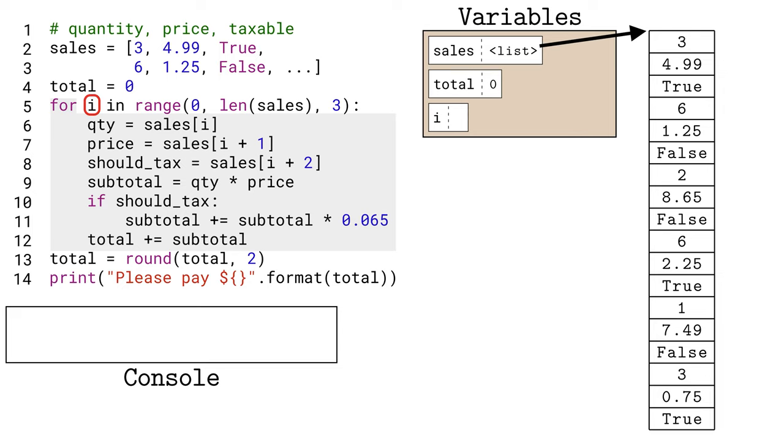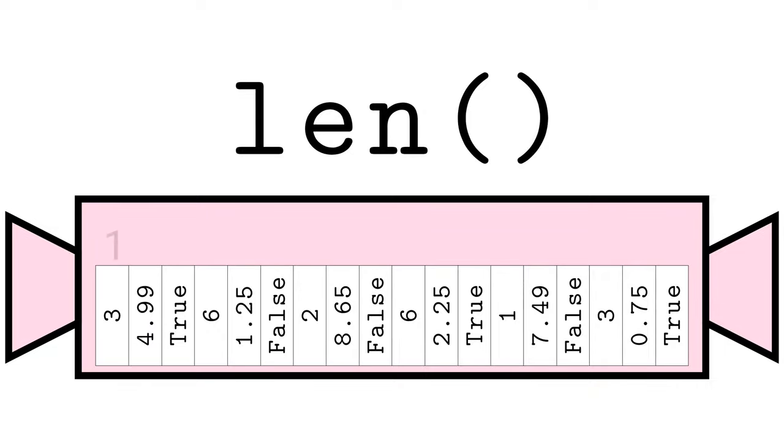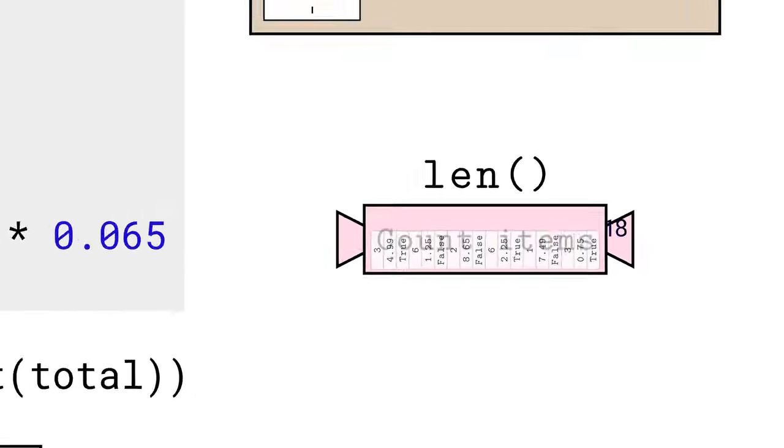What values is i going to have? To answer that, Python first looks at the inputs to the range function and sees this len function call. Python needs to evaluate that first before it can evaluate the range. Len takes one input, something like a list, string, or dictionary, and counts up how much is in that thing. Because this is a list, Len counts all the elements in the list and returns that as an integer.